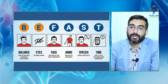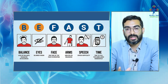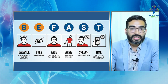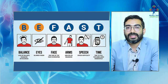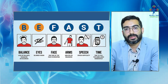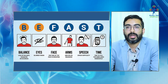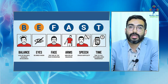FAST stands for: F for face, A for arms — sudden onset facial deviation or weakness in the arms or legs. S is for speech — any sudden onset speech disturbance. And T is for time — that is the time when you have to rush to the hospital.